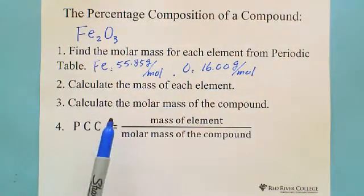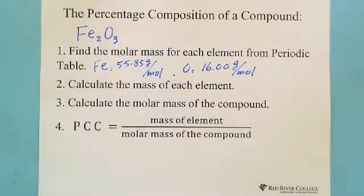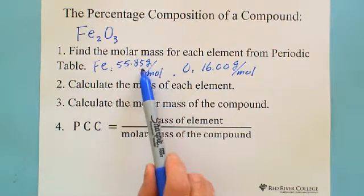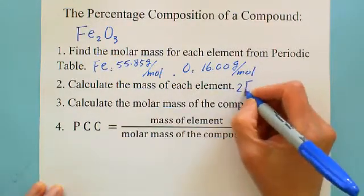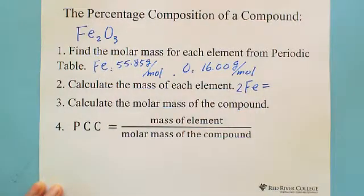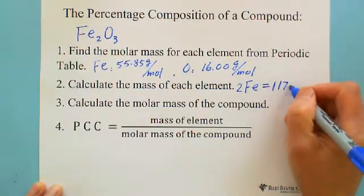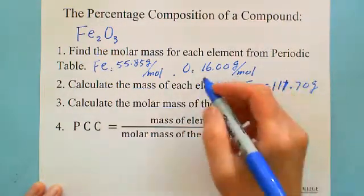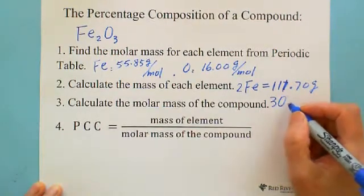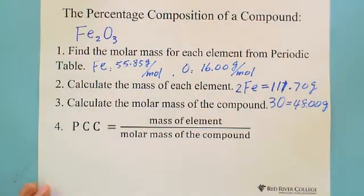Then the second step is to calculate the mass of each element. Because there are two moles of iron, we multiply 55.85 grams by two. And we need to multiply by three for the oxygen. So for two moles of iron, the total is 111.70 grams. And for three moles of oxygen, the total equals 48.00 grams.